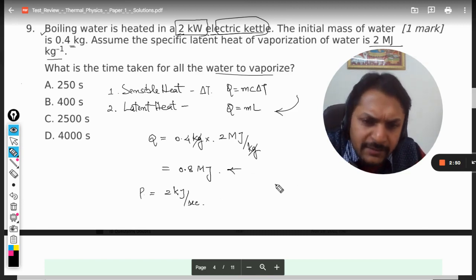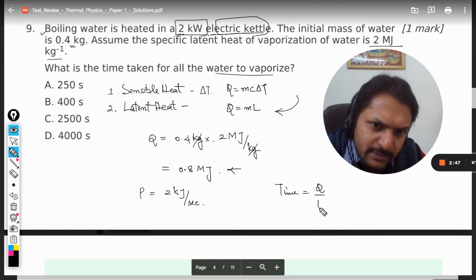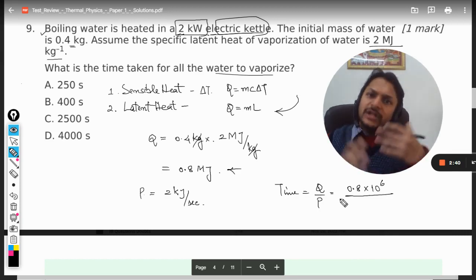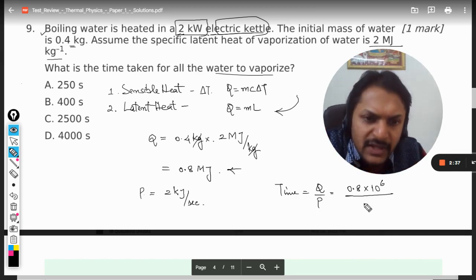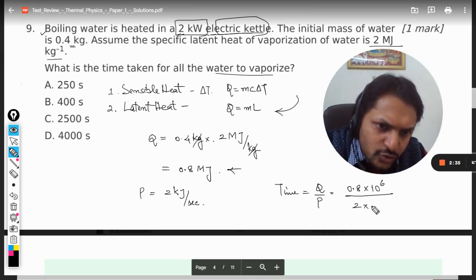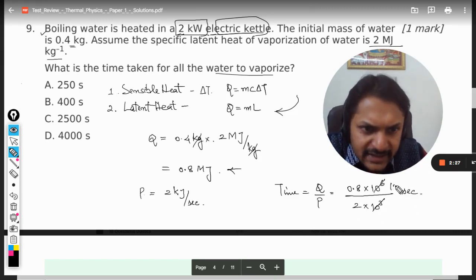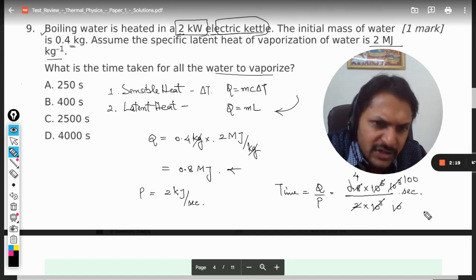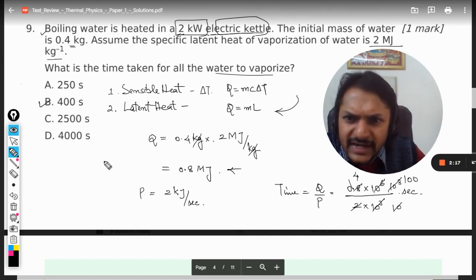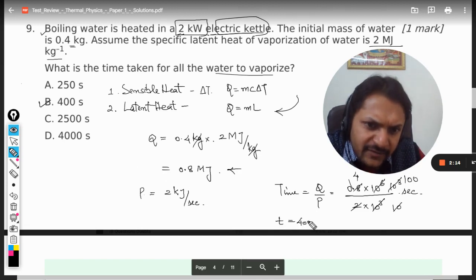So we want to find the time, so definitely the time will be Q divided by P. And Q is 0.8 into mega, so now I'm just converting mega into 10 raised to power 6, and we divide by 2 into 10 raised to power 3, that is kilo, and the answer will come in seconds. So this is 3 and we remove the decimal, this becomes a 4 and this becomes 100, so it's 400 seconds.